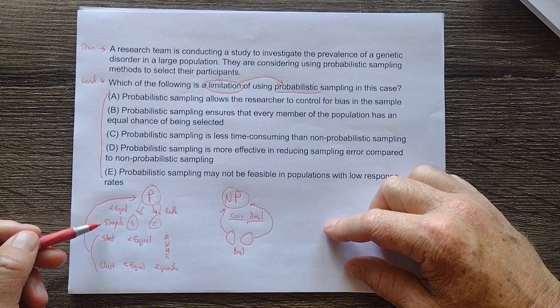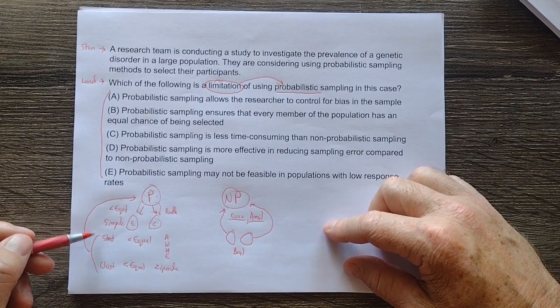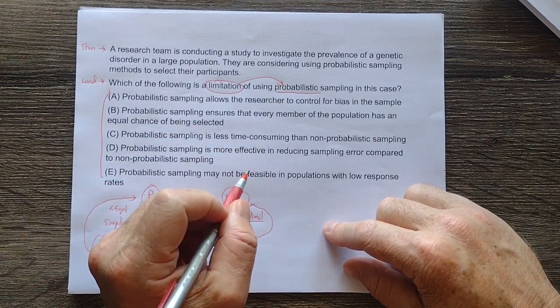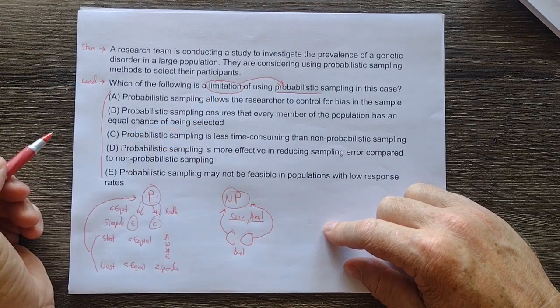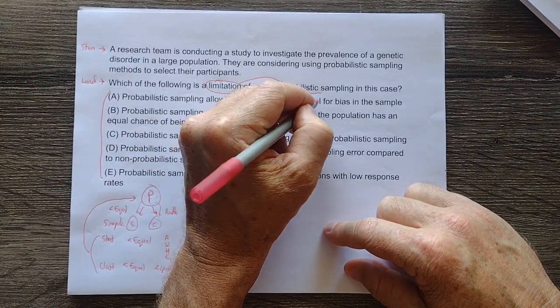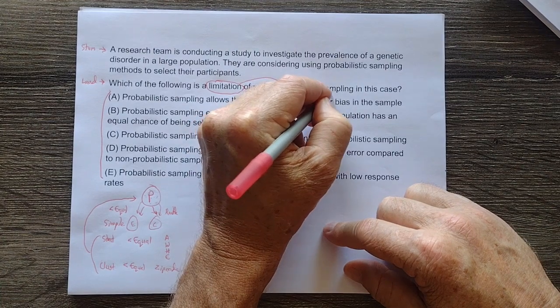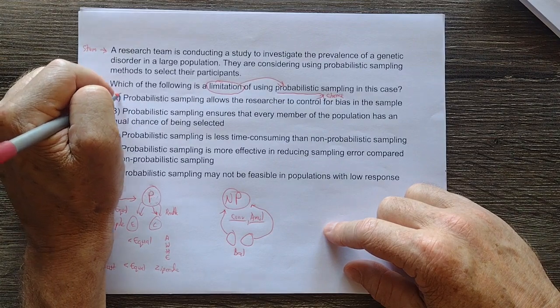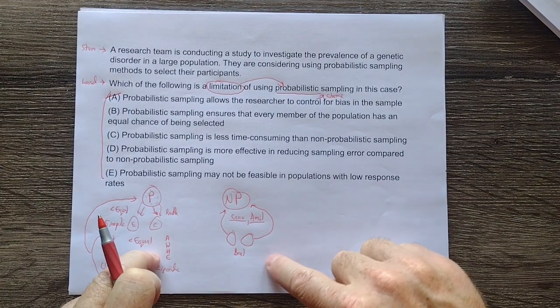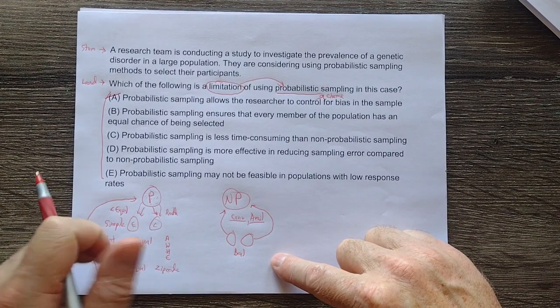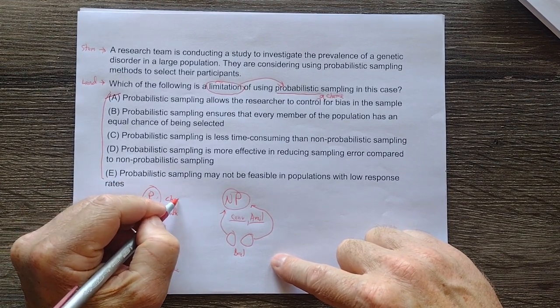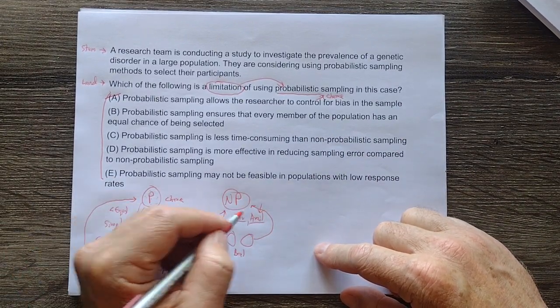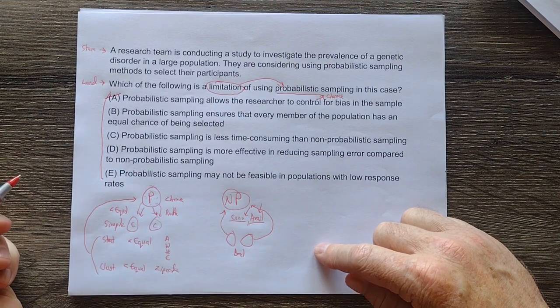...given that chance is being used in probabilistic. But probabilistic does not allow the researcher to control for more bias. So that is not a limitation because chance is driving this, not control. So that is not a limitation of probabilistic. Even though there is a chance for bias in each one, in this one chance drives it and not control. This one I control because I am choosing the availability of who goes in there or doing a convenient sample.